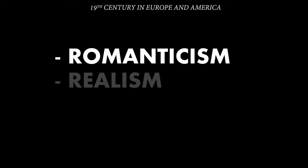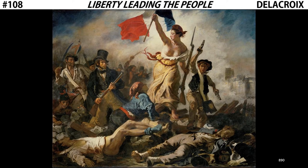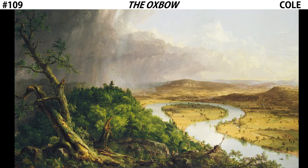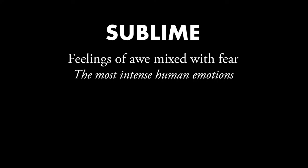As a quick review of Romanticism, the works we looked at earlier this year — Liberty Leading the People, The Slave Ship by J.M.W. Turner, and The Oxbow by Thomas Cole — are all romantic paintings. Their focus is on capturing the sublime. The sublime is a feeling of awe mixed with fear, and the Romantics believed it was the most intense emotion a human could experience.